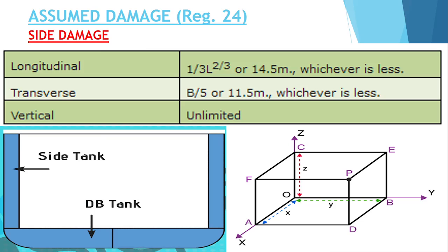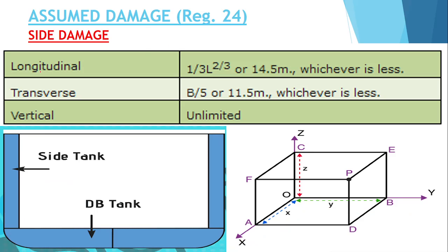Longitudinal refers to this part, transverse refers to this part, and vertical refers to this part. For side damage, the longitudinal extent is 14.5 meters or 1/3 L^(2/3), whichever is less. In the transverse direction, the extent is B/5 or 11.5 meters, whichever is less.